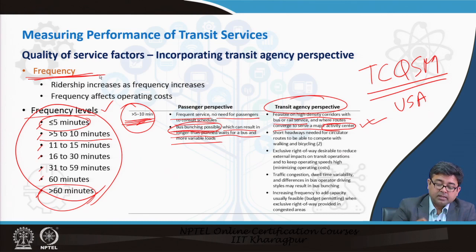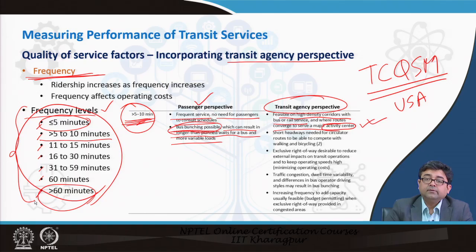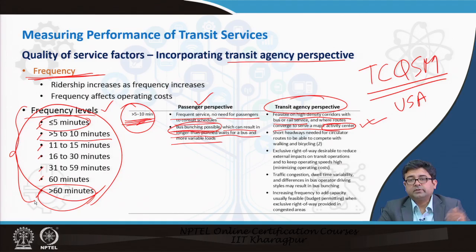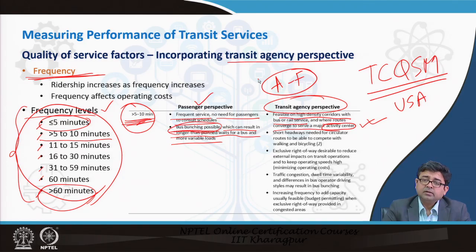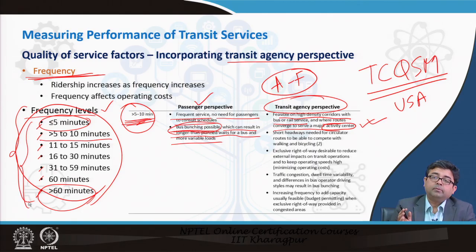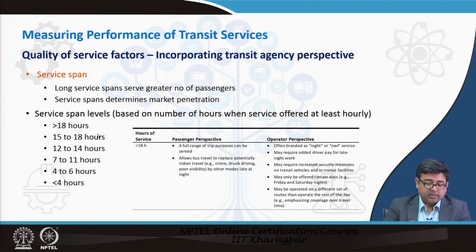All these factors and parameters have both a transit agency perspective and a passenger perspective, and they can be converted into different scales to gauge the performance of your transit service. This is very synonymous to a level of service, but many transit agencies do not like the letter grade A through F system because they feel it is too academic. Rather than giving a grade, the levels are simply divided into numbered levels — you could easily assign A through F, but the preference is not to do so.